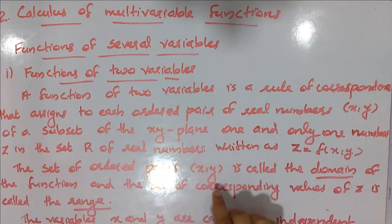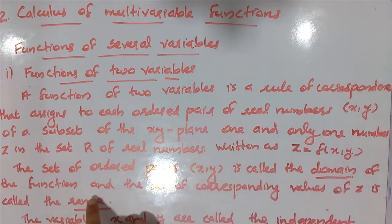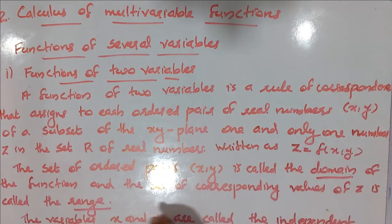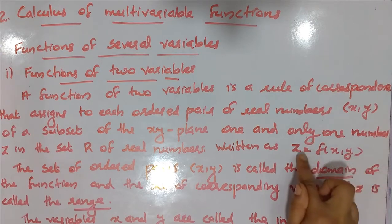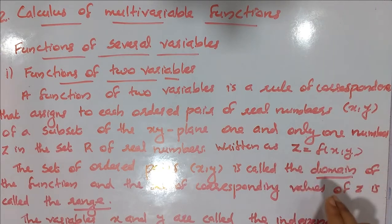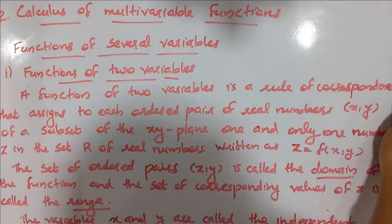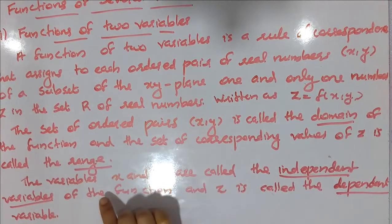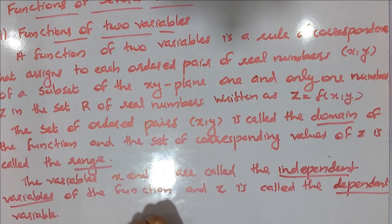The ordered pair xy is called the domain of the function, and the set of corresponding values of z is called the range. The corresponding z value, f of xy, gives the real number z — that corresponding z value is the range of the function. The variable can be independent or dependent. This is a single-valued function.